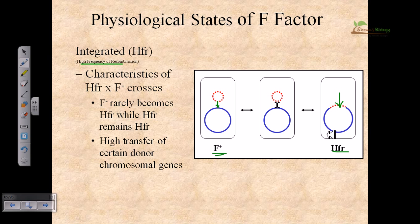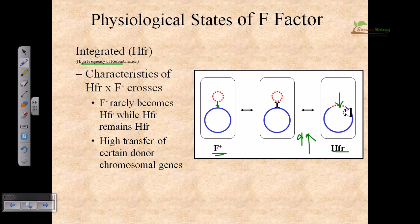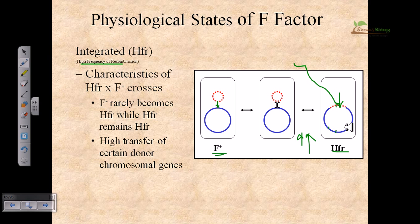The frequency of recombination is really high in HFR strains because the fertility factor with its origin of transfer is present within the chromosome. The DNA can be cleaved at the origin of transfer and dragged into the recipient cell. Due to the presence of this extra-chromosomal DNA integrated with the chromosomal DNA, a cut can be made and the DNA strand dragged, which will pull chromosomal DNA along with it. This increases the frequency of recombination for chromosomal genes.